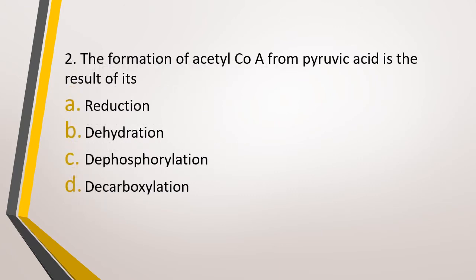Question number 2. The formation of acetyl-CoA from pyruvic acid is a result of? Option A: Reduction. Option B: Dehydration. Option C: Dephosphorylation. Option D: Decarboxylation. The correct answer is Option D — decarboxylation. That's why acetyl-CoA is a 2-carbon compound whereas pyruvic acid is a 3-carbon compound, so one carbon is getting removed.